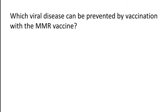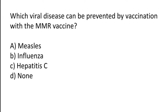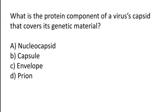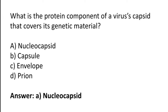Which viral disease can be prevented by vaccination with the MMR vaccine? Options: Measles, Influenza, Hepatitis C, None. The correct answer is option A — Measles can be prevented by vaccination with the MMR vaccine. What is the protein component of a virus capsid that covers its genetic material? Options: Nucleocapsid, Capsule, Envelope, Prion. The correct answer is option A — Nucleocapsid is the protein component of a virus capsid that covers its genetic material.